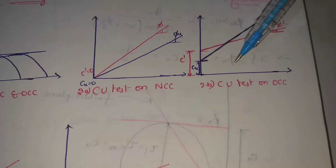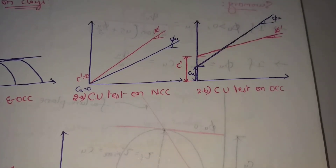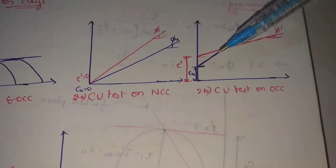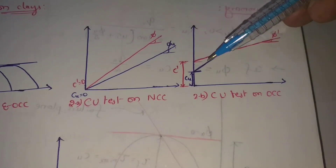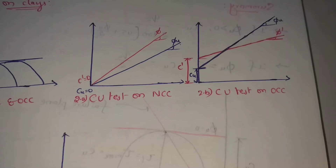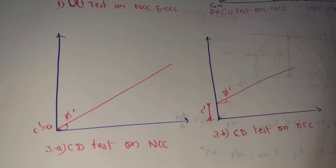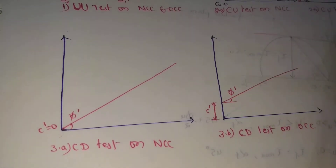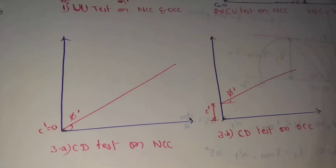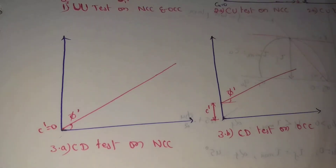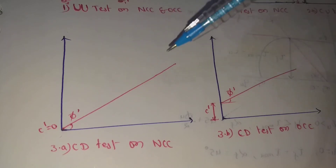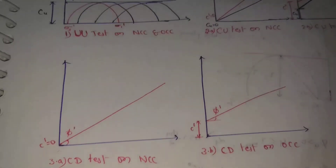Consolidated undrained test on OCC — over-consolidated clay. The intercept value and angle are shown on the graph.